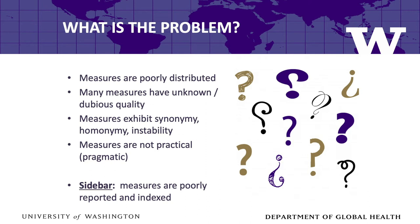Third, measures exhibit synonymy, homonymy, and instability. That is, we see the same items being used to measure different constructs, different items used to measure the same construct, and changes to items with each use of a measure. For example, the range of items used to measure organizational readiness for change is breathtaking. Often there is very little overlap in item content between two measures of 'organizational readiness.' Not only that, items used to measure organizational readiness are often also used to measure other constructs like organizational culture or management support. And it is very tempting—and it often occurs—for researchers to add, drop, or modify items in a measure to tailor it to their research study. These three problems raise serious doubts about the construct validity of our measures.